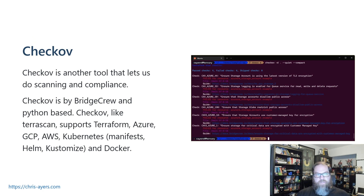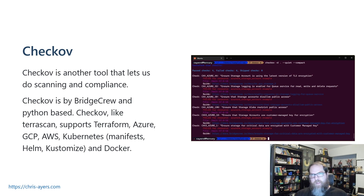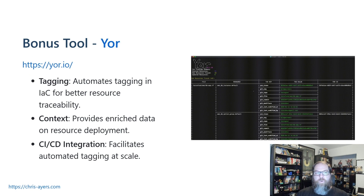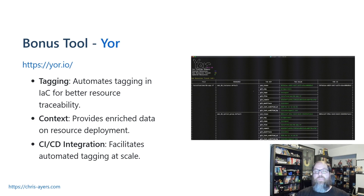Checkov is one of my favorites. It's by Bridgecrew, recently acquired by Prisma Cloud, and it has an amazing VS Code extension. Like the others, it supports pretty much everything — Terraform, ARM, Bicep, CloudFormation, Kubernetes, Docker. As a bonus, there's also Terratag, a nice tool that works with Terraform to automate tagging — tagging resources with where the Git commit came from, the repo, the commit number, and the last time you modified a resource.